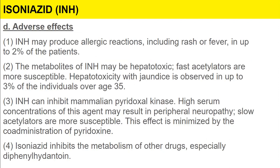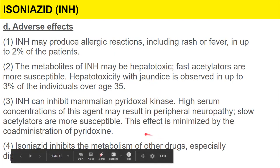Adverse effects of isoniazid include allergic reactions, rash, and fever. The metabolites are hepatotoxic; fast acetylators are more susceptible, and hepatotoxicity is observed in up to three percent of individuals over the age of 35. It can inhibit mammalian pyridoxal kinase, and high serum concentrations may result in peripheral neuropathy — slow acetylators are more susceptible. This effect is minimized by co-administration of pyridoxine. Isoniazid also inhibits the metabolism of other drugs, especially phenytoin, causing drug interactions.